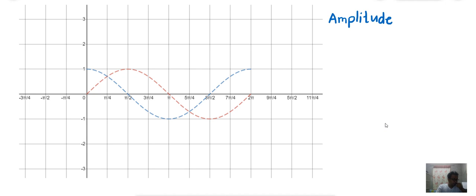The amplitude is defined as the maximum value of the function. For example, for the regular one, f(x) equals sine x and cosine x, the amplitude is 1 because the highest point is 1 and the lowest point is negative 1.